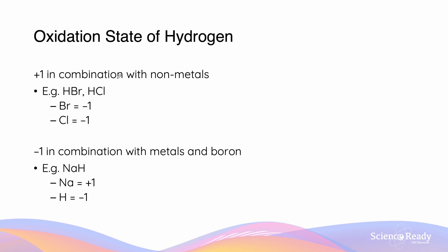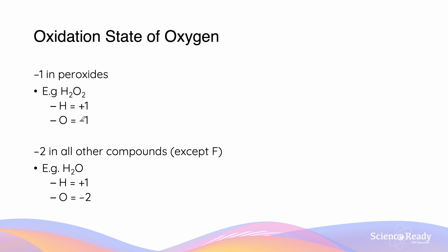The oxidation state of hydrogen is +1 in combination with a non-metal. So for example, we have HBr and HCl — each of them are neutral, meaning that they have an overall oxidation state of zero. Because bromide has an oxidation state of −1 and chloride has an oxidation state of −1, hydrogen is going to have a state of +1 to neutralize these charges when forming a compound. However, hydrogen is going to have an oxidation state of −1 when in combination with metals and boron. For example, in NaH, sodium is going to have an oxidation state of +1, meaning hydrogen must have an oxidation state of −1. The reason H is +1 in the previous case and not −1 is because the peroxide does not contain a metal.